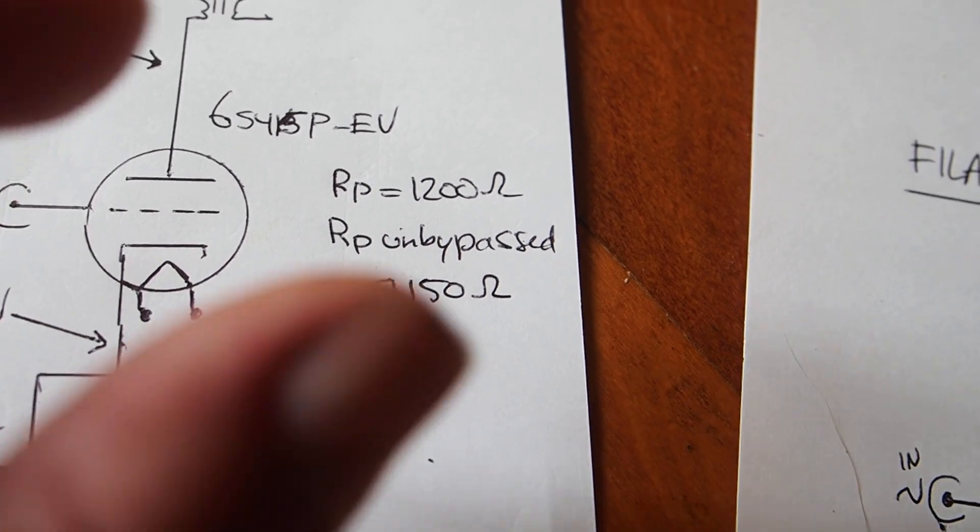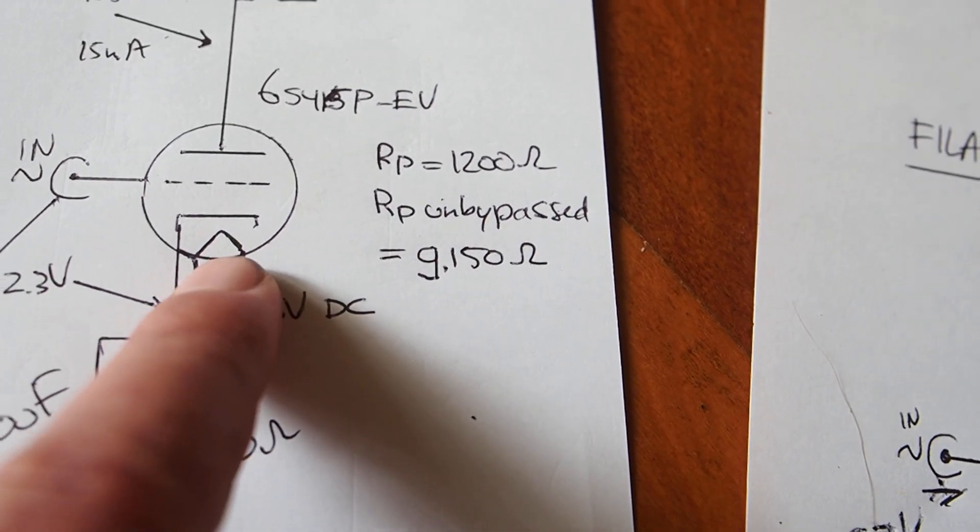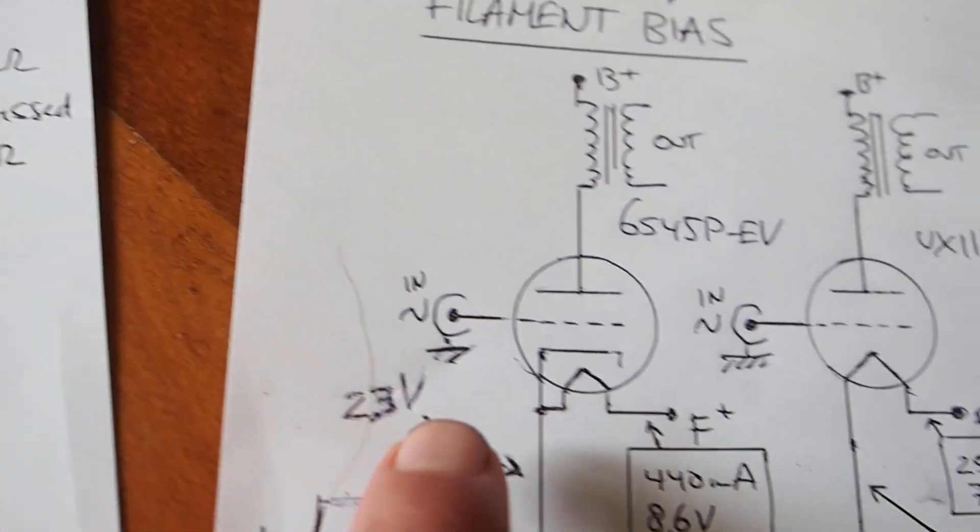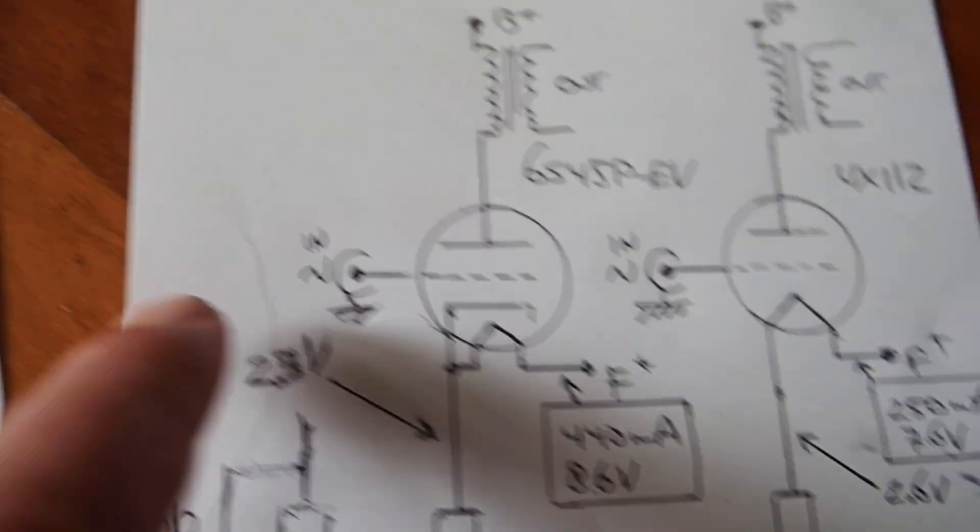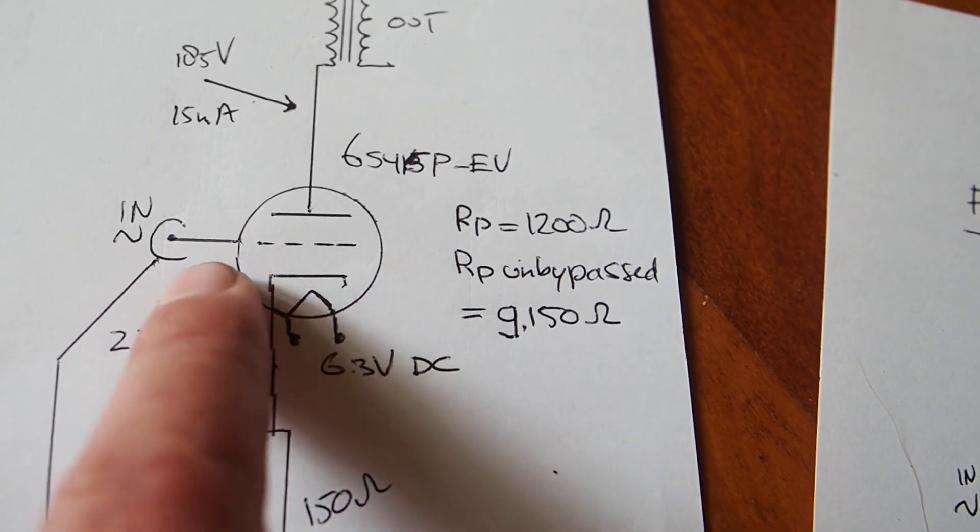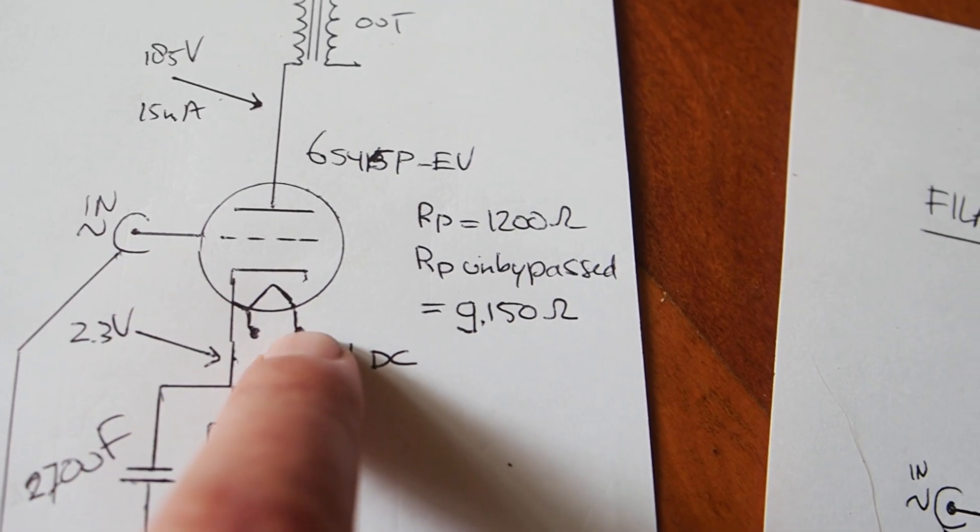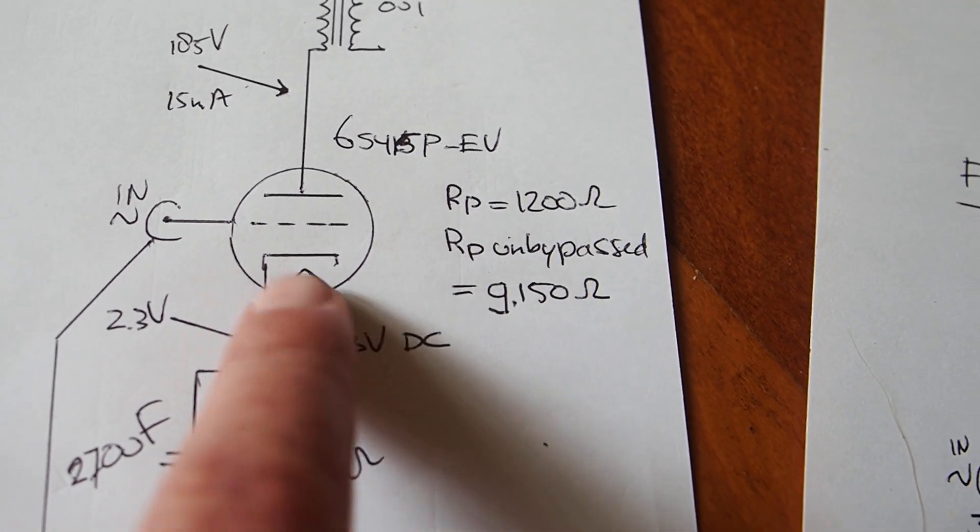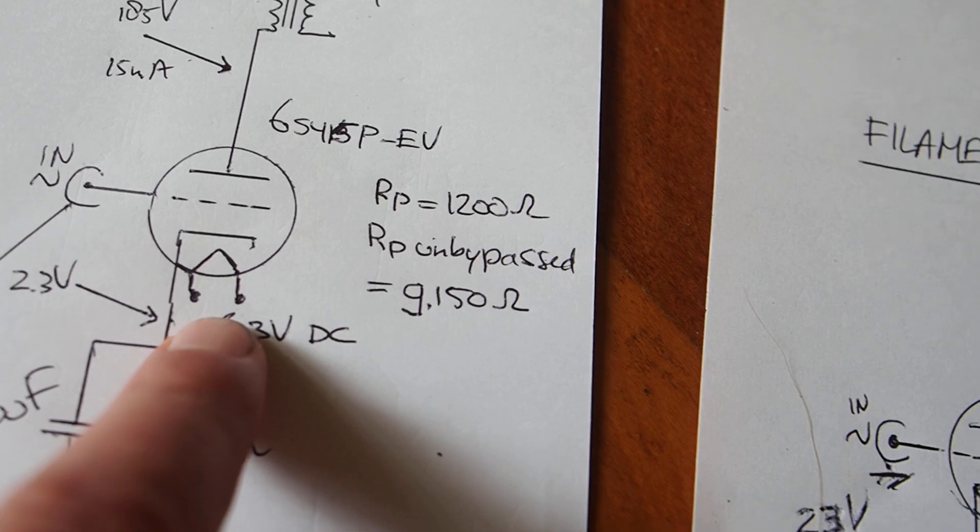Now what I found is that if I even in this situation put DC on this tube, I can reduce the size of the grid stopper by an enormous amount and I don't get any oscillations.